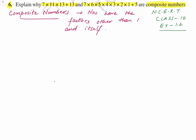Now let's start with the first number form: 7 into 11 into 13 plus 13. This is the number pattern given to us. You can easily see that there is a plus sign here and multiply signs. So we can take 13 as common from this expression. When we take 13 as common, inside we are left with 7 into 11 plus 1.